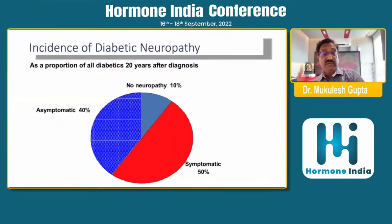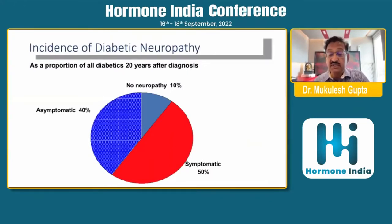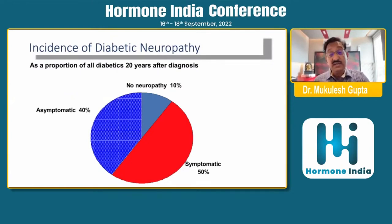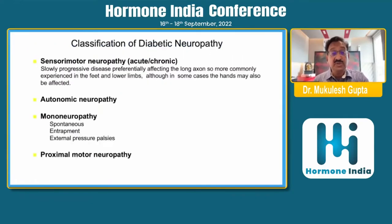Once we talk of a person with diabetes 20 years from diagnosis, we can see that only 10% of patients are left without neuropathy. The remaining 90% — 50% will be symptomatic and 40% will be asymptomatic diabetic neuropathic patients.